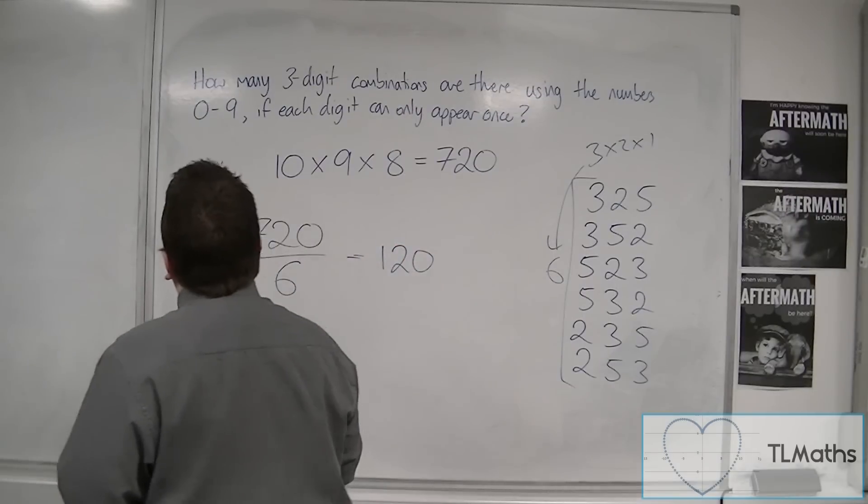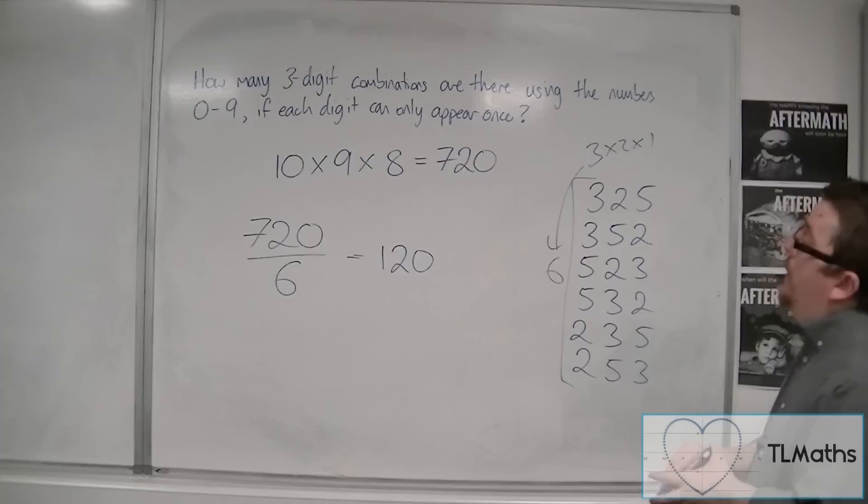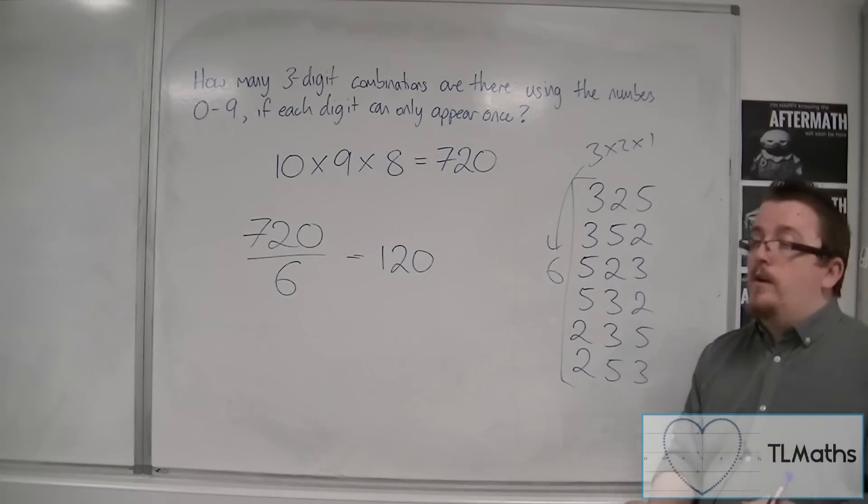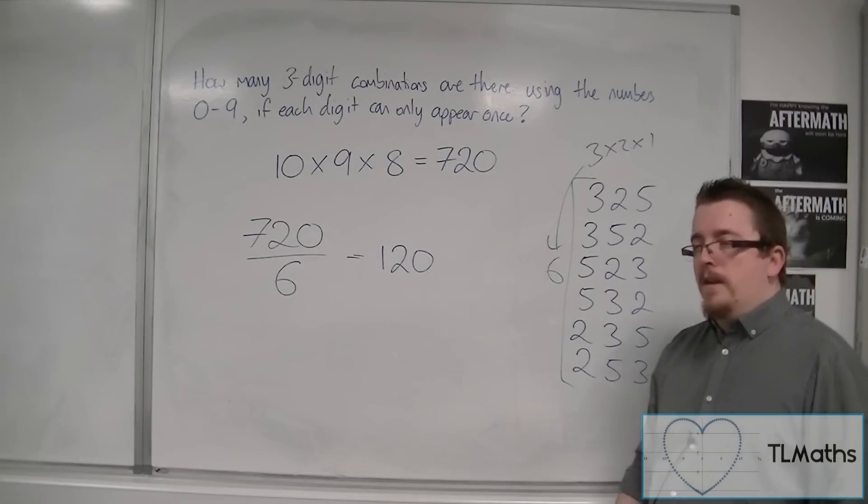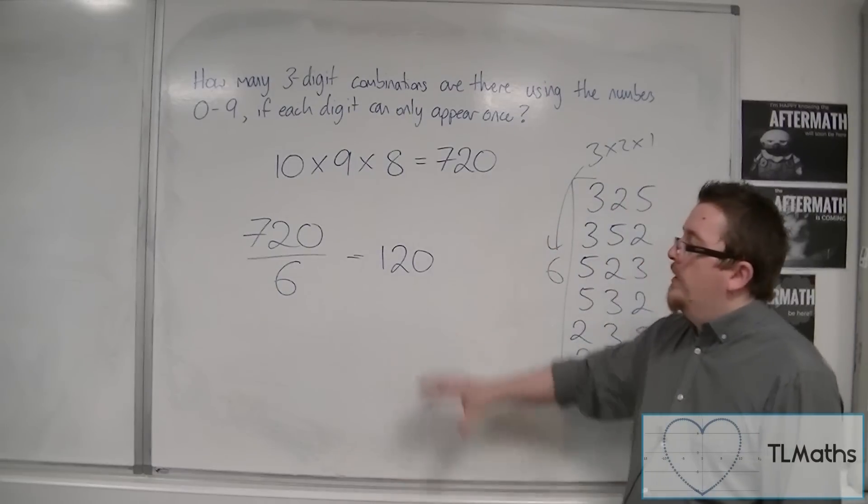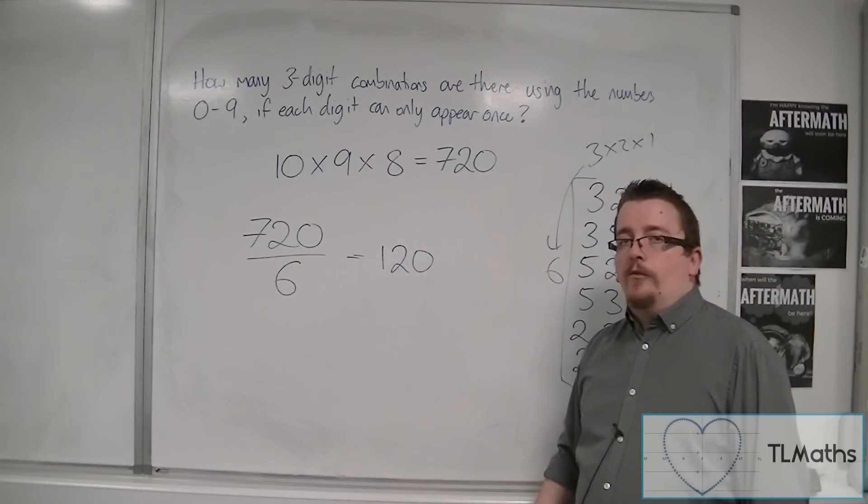And so in actual fact, there are 120 three-digit combinations that use the numbers 0 to 9 if each digit can only appear once. So that is how this problem changes subtly. And we're going to work with this again in the next video.